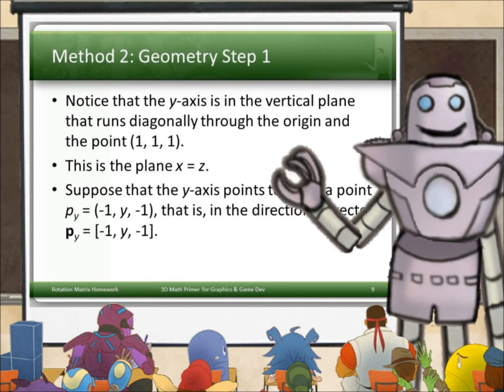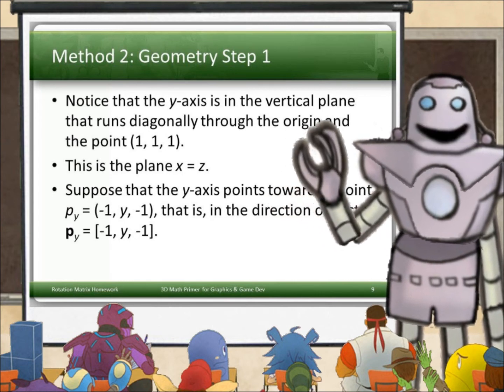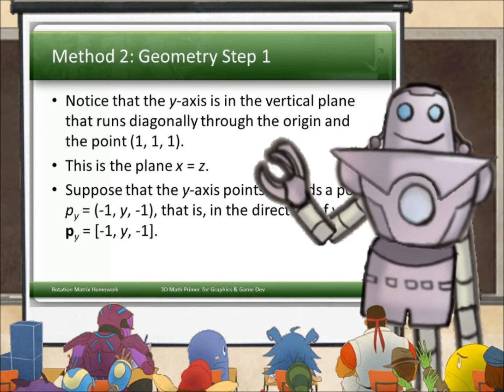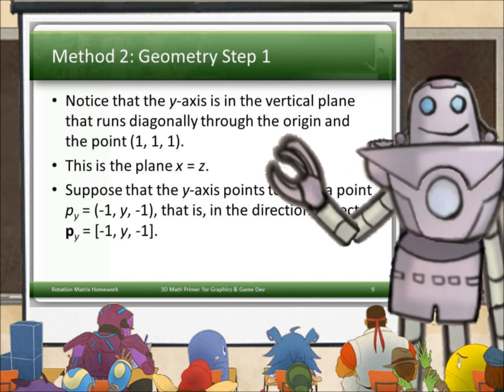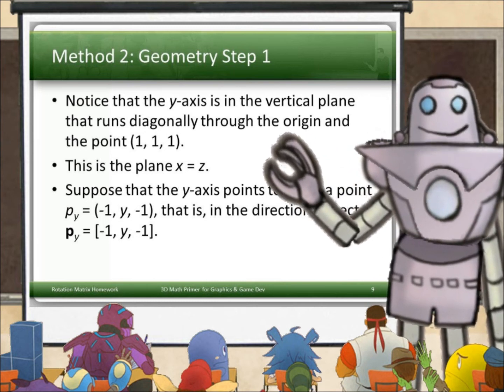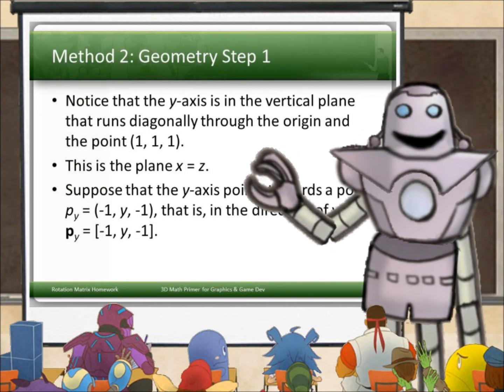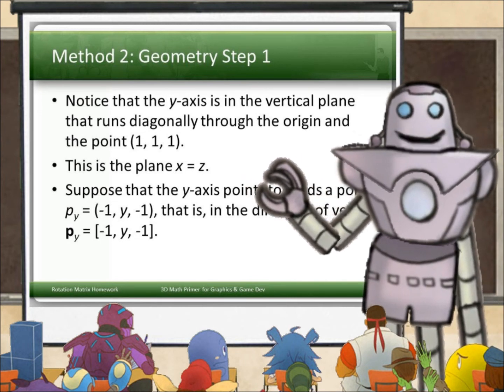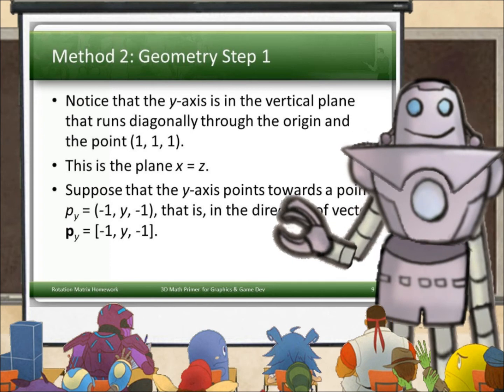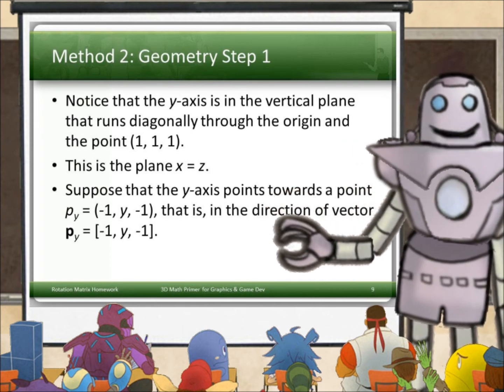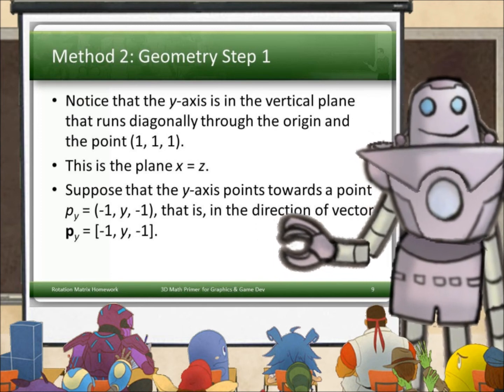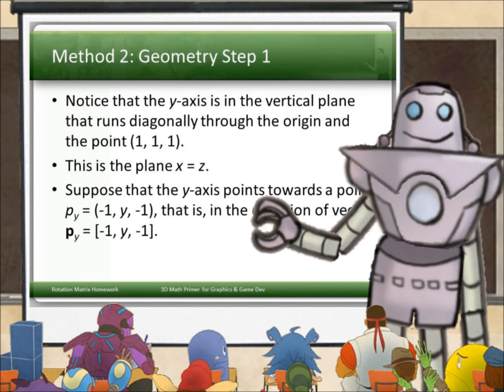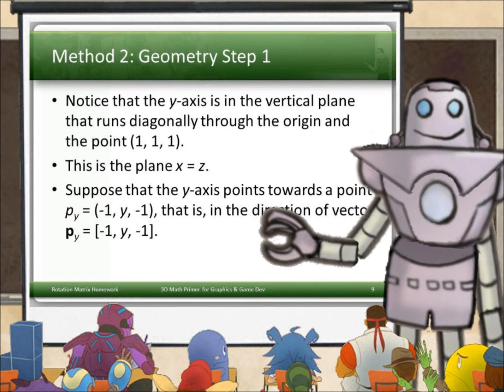Now, notice that the y-axis is in that vertical plane that runs diagonally through the origin and the point (1, 1, 1). Oh, and (-1, -1, -1), two. That is, it's in the plane x equals z. Okay. So suppose the y-axis points towards a point (-1, y, -1), in the direction of vector p_y equals (-1, y, -1).